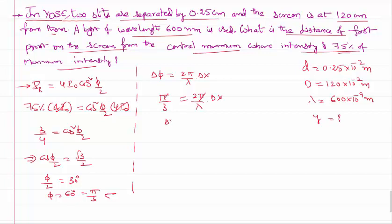So Δx is λ/6, where lambda is 600 × 10⁻⁹ divided by 6, that is 100 × 10⁻⁹ meters.